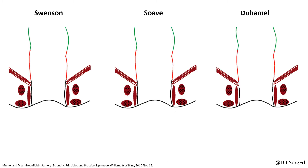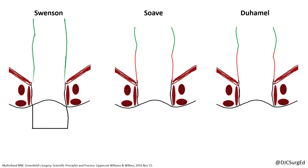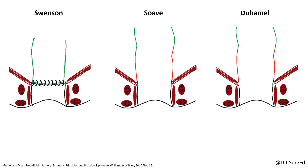The Swensen procedure involves resection of the entire aganglionic colon with an end-to-end anastomosis above the anal sphincter, performed through a perineal approach after eversion of the aganglionic rectum. The Suave procedure avoids the risk of injury to pelvic structures